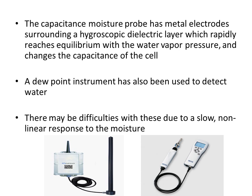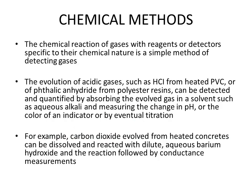The capacitance moisture probe has metal electrodes surrounding a hygroscopic dielectric layer, which rapidly reaches equilibrium with the water vapor pressure and changes the capacitance of the cell. By the change in capacitance, we can detect the presence and quantity of water vapors. Another instrument is the dew point instrument, which has also been used to detect water. There may be difficulties with these instruments due to a slow, nonlinear response to moisture.